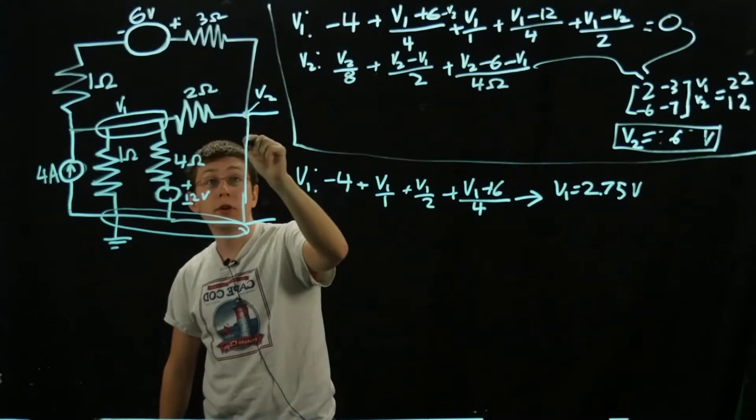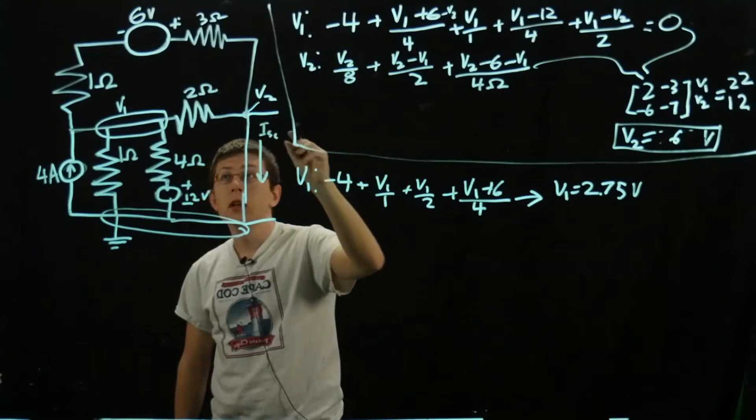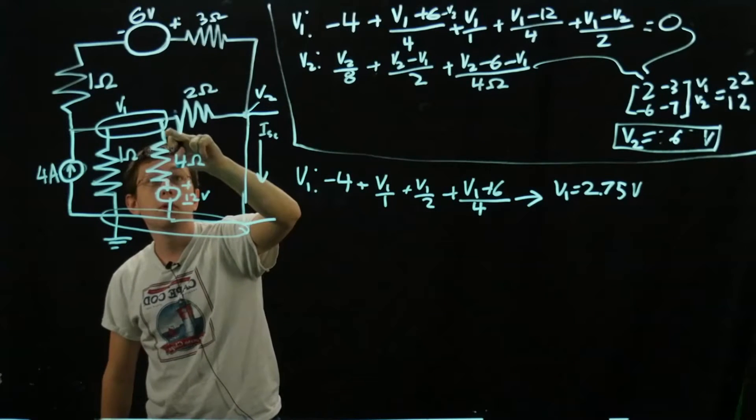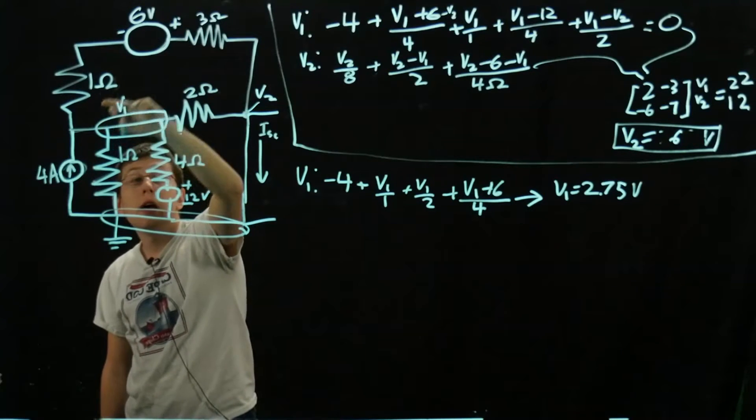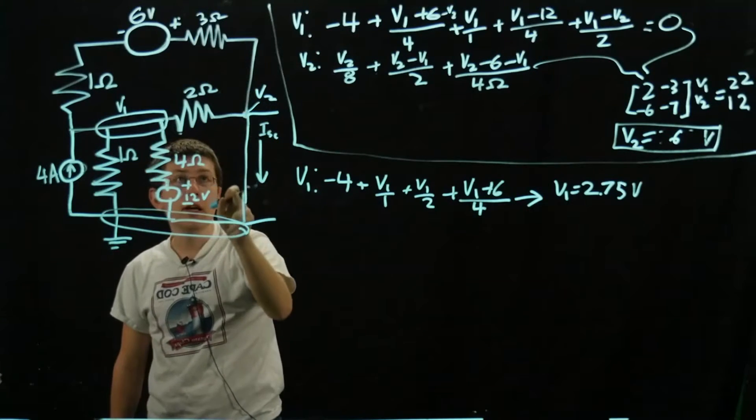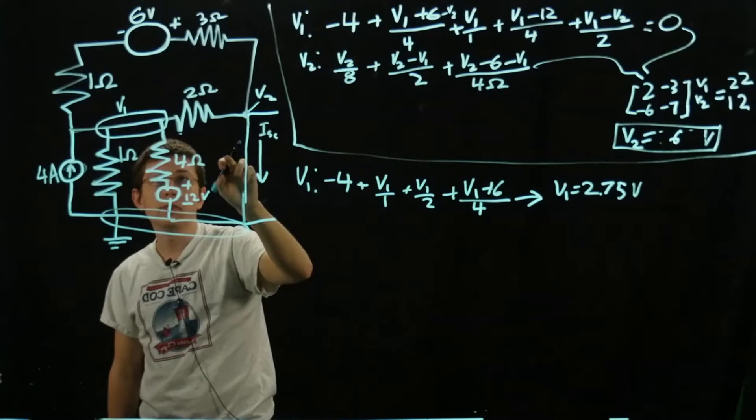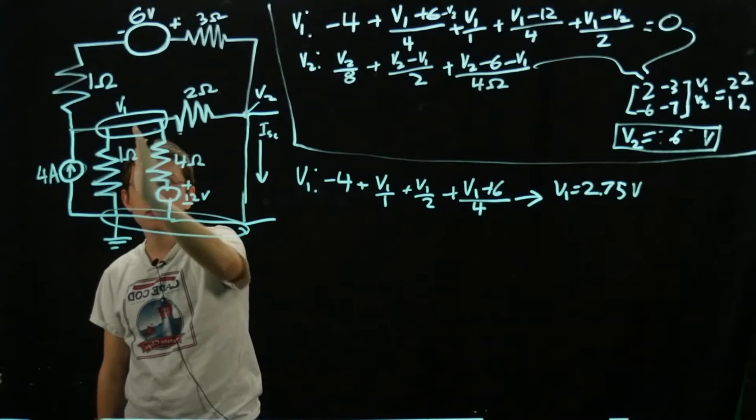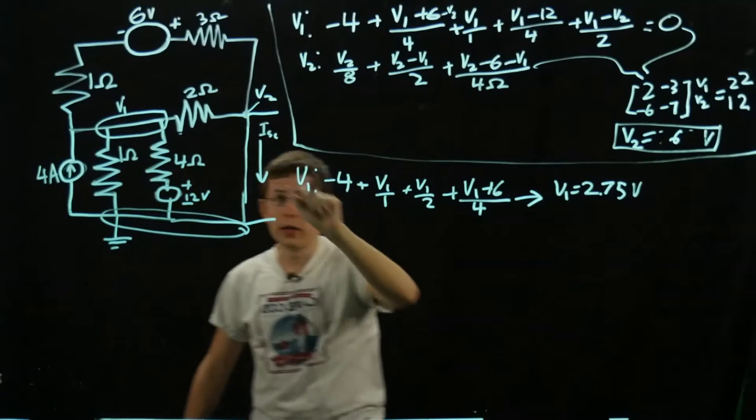To find the current flowing down here, ISC, the current flowing down here comes both down this way from V1 and up from this branch and down. We only really have to include those two branches because current this way we don't care about. It's just these two ways.